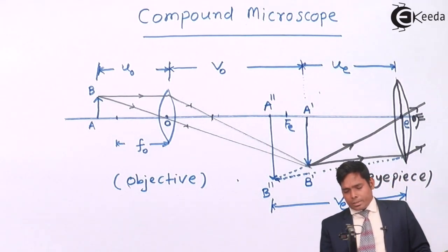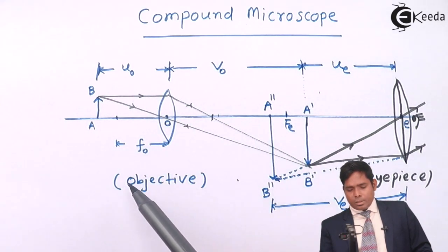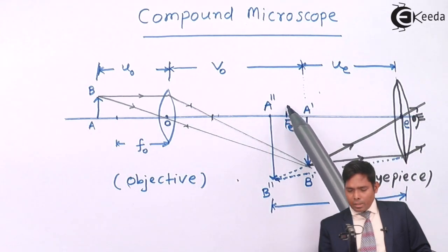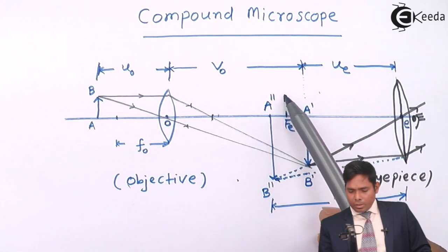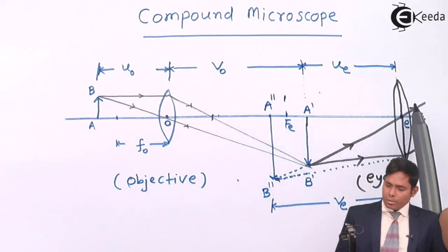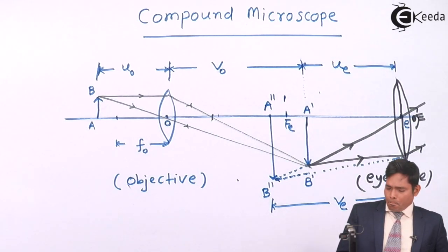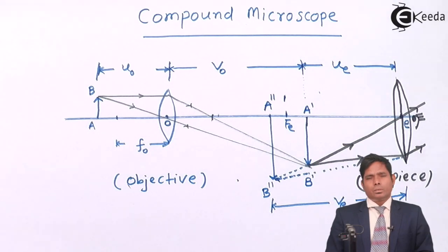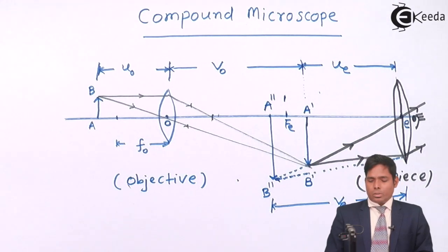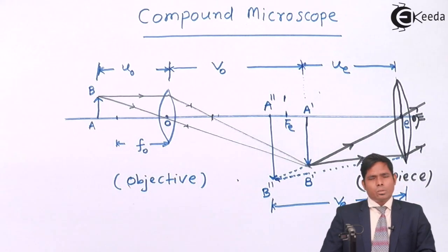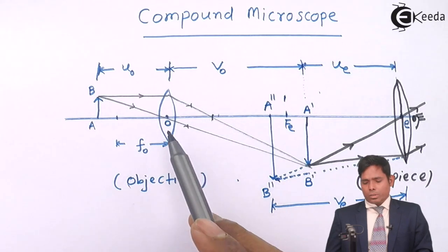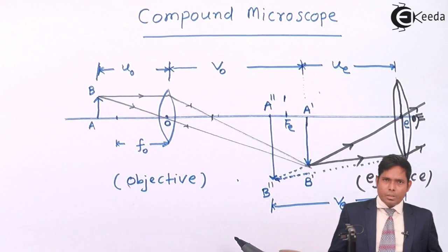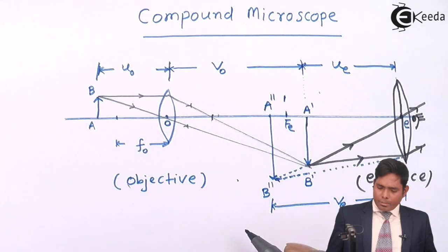We also need the focal lengths f_o for the objective and f_e for the eyepiece. Now we are going to find the magnifying power of the compound microscope. The compound microscope has two lenses: the objective, which is smaller, and the eyepiece, which is larger.